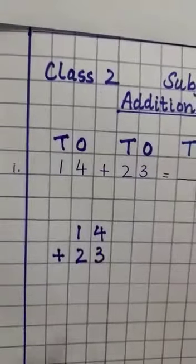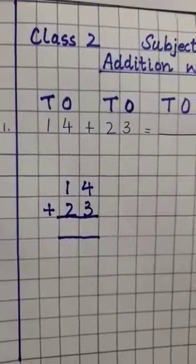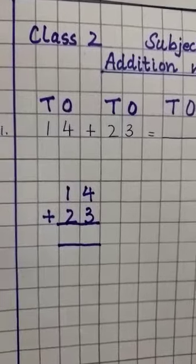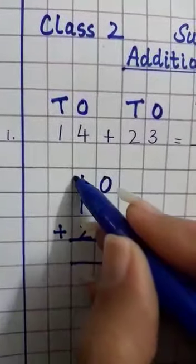Now we have arranged this sum in vertical form. Next we will write the place value: ones, tens.